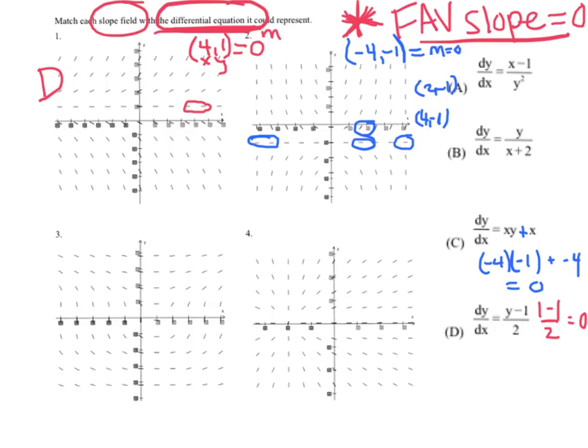Alright, moving on to graph three. Again, I'm looking for that favorite slope, a slope of zero. I see a bunch of them again, sitting right here. So I'm just going to pick an odd one. I'm going to go with one four. So I'm going to say at one four, I definitely have a slope of zero. And again, I'm just going to plug my points in to see which one gives me that.